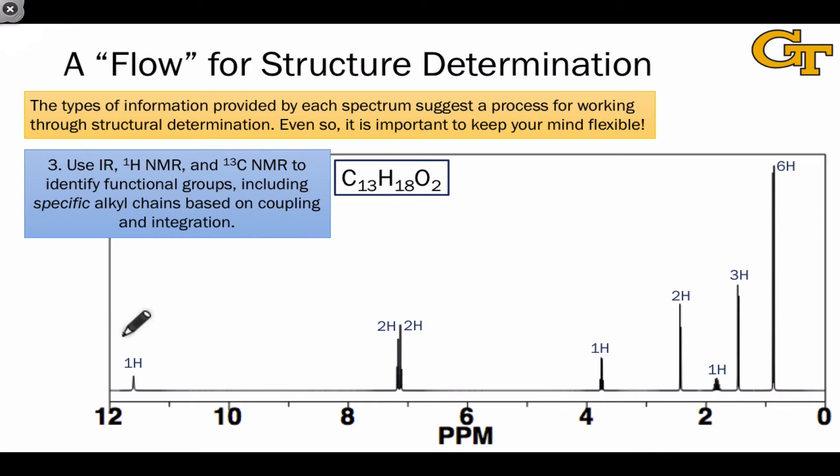One thing the carbon-13 spectrum would have told us is that there's likely a carboxylic acid functional group in this molecule, and this peak way out at 12, which integrates to 1, is a big indicator of that. 2H and 2H in the aromatic region tells us that we've got a substituted aromatic ring in a para-substitution pattern with two distinct groups of protons. There's the rest of our degrees of unsaturation.